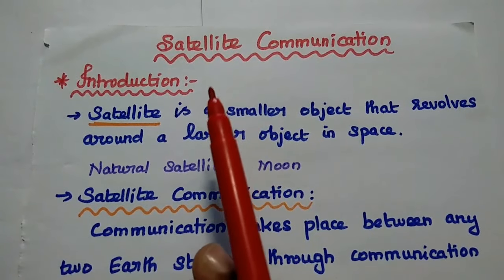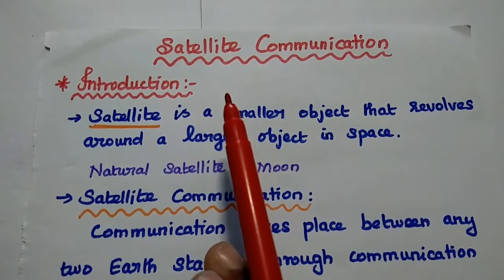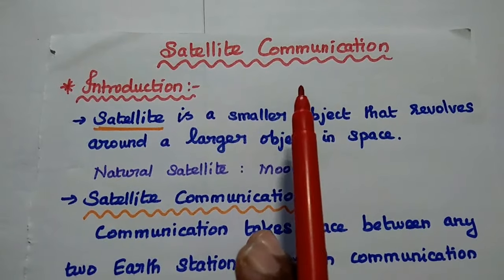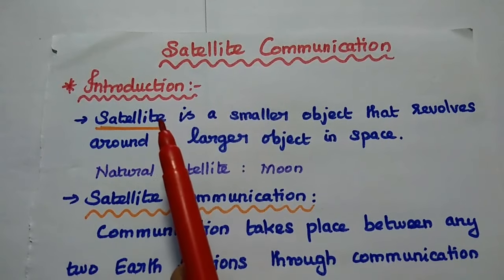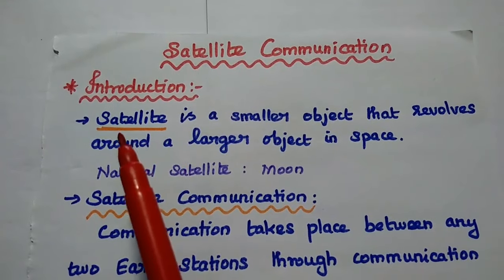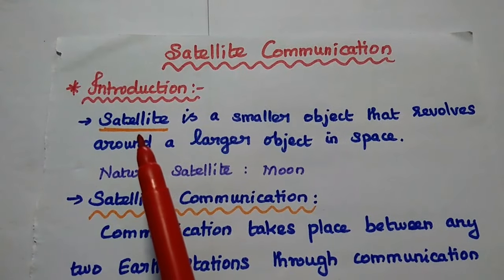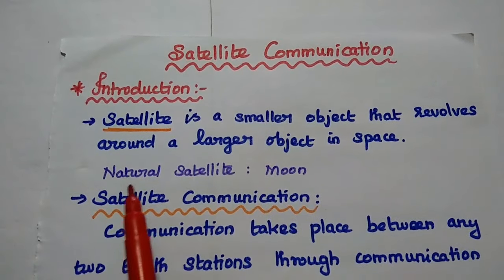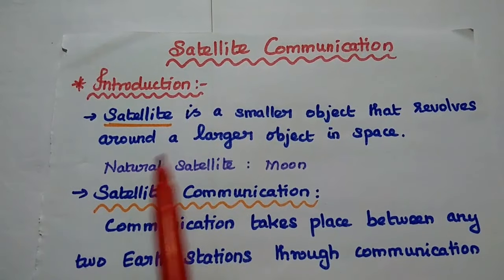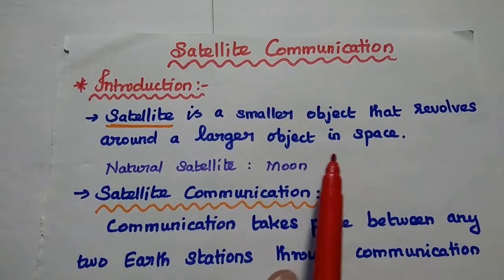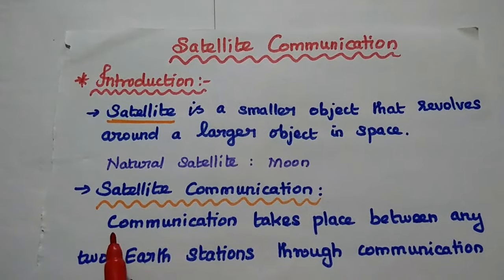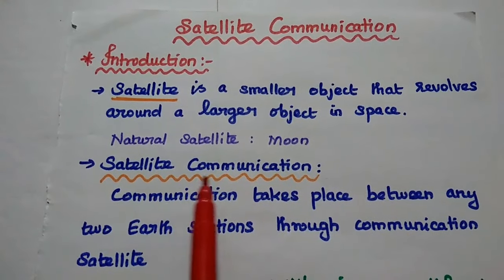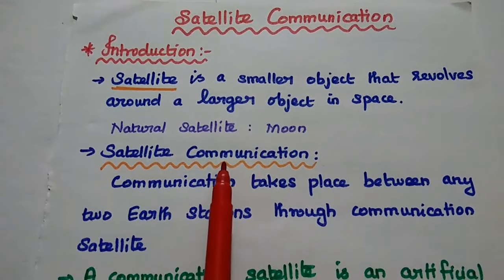Dear students, now we are going to discuss the basics of satellite communication. Let's start with an introduction. What is meant by satellite? A satellite is a smaller object that revolves around a larger object in space. For example, the natural satellite moon revolves around the earth.